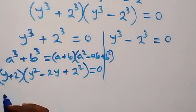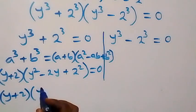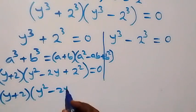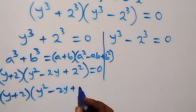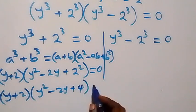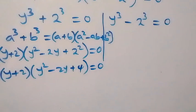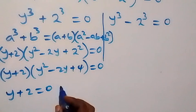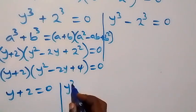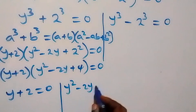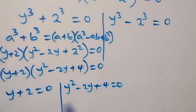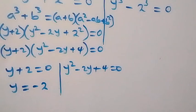So we have (y + 2)(y² - 2y + 4) equals to zero. We now have two cases here: y + 2 equals to zero, or y² - 2y + 4 equals to zero. Taking the first case, y equals to minus 2.